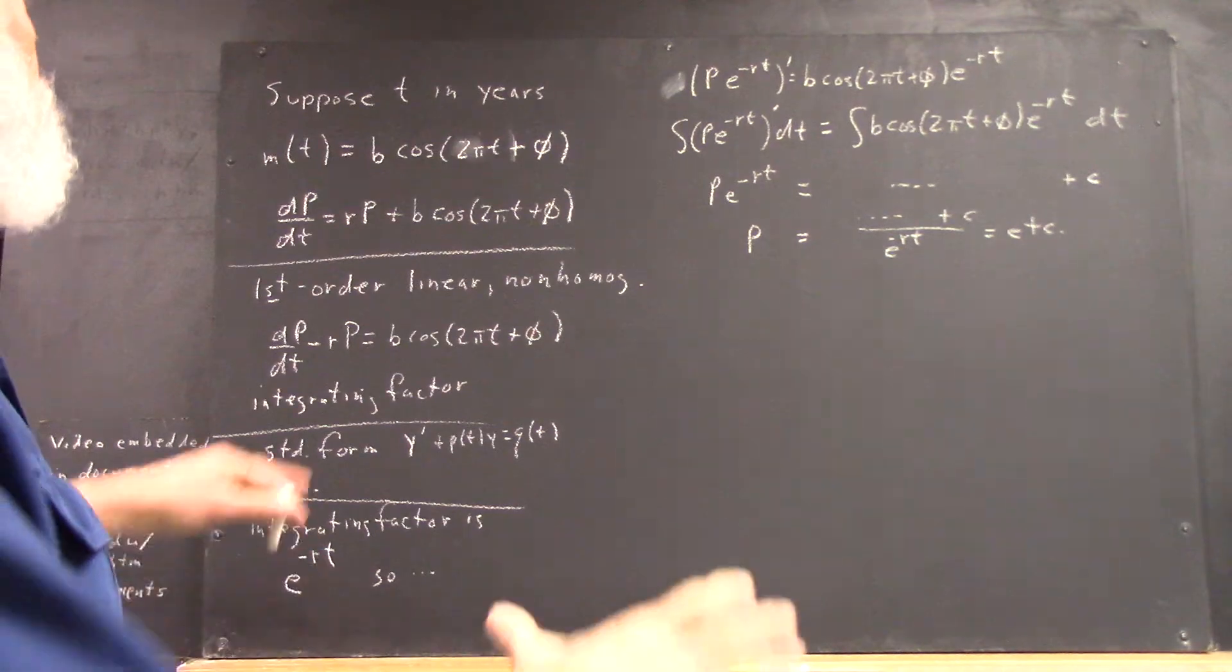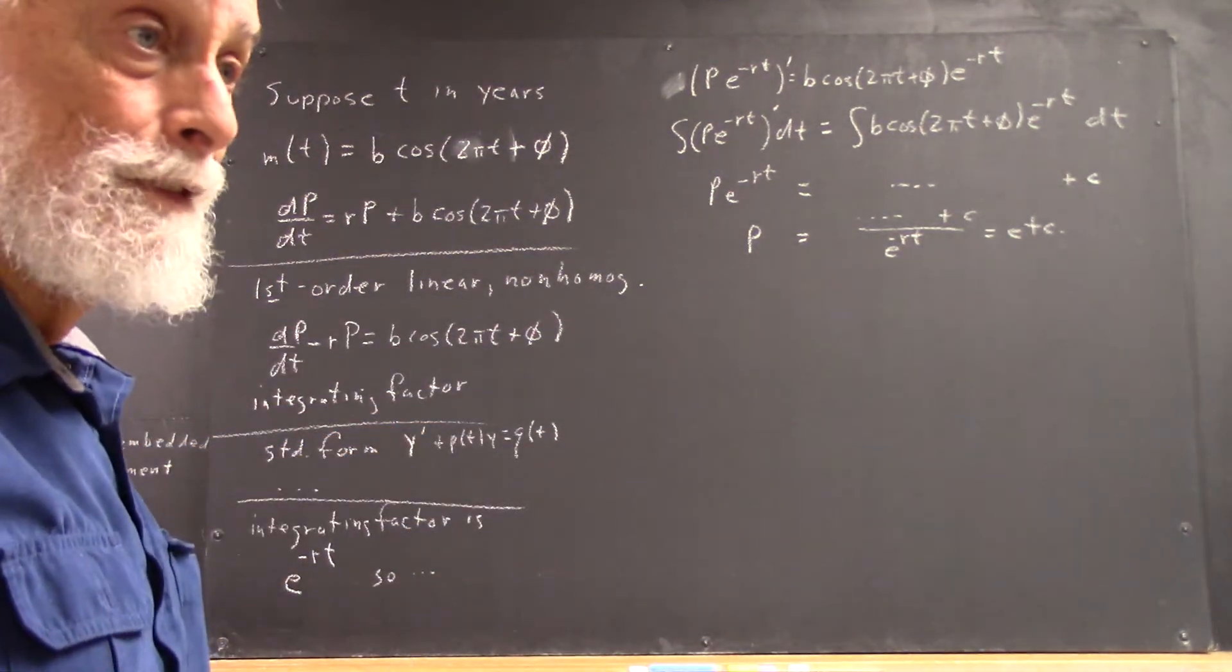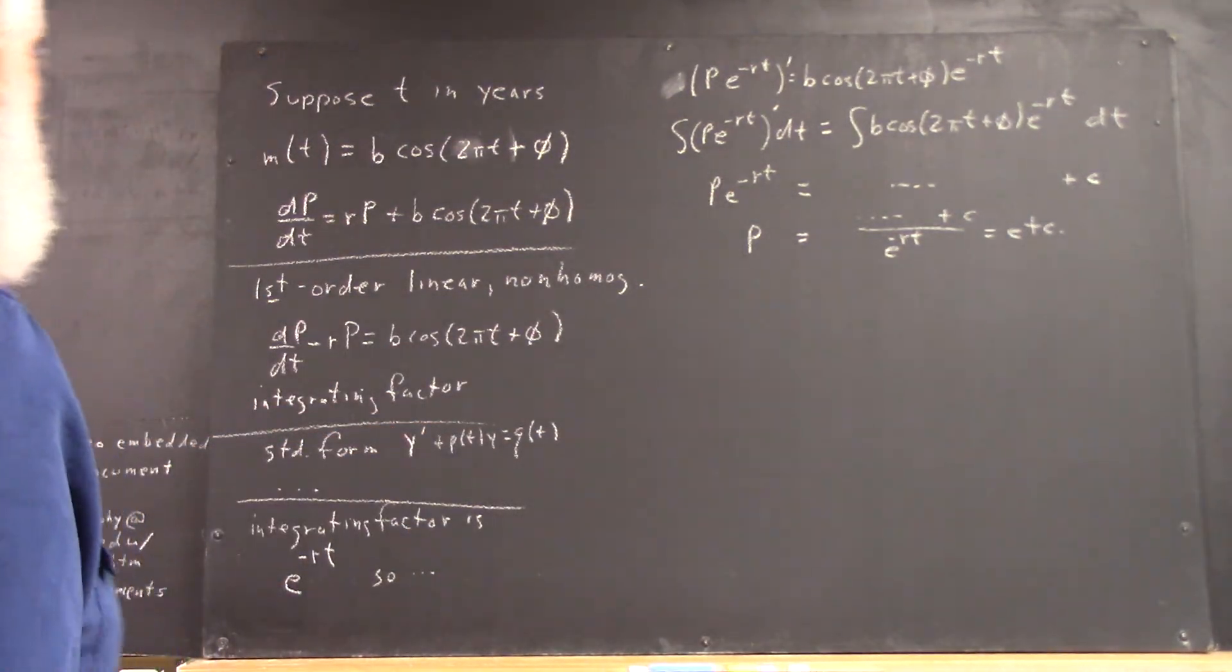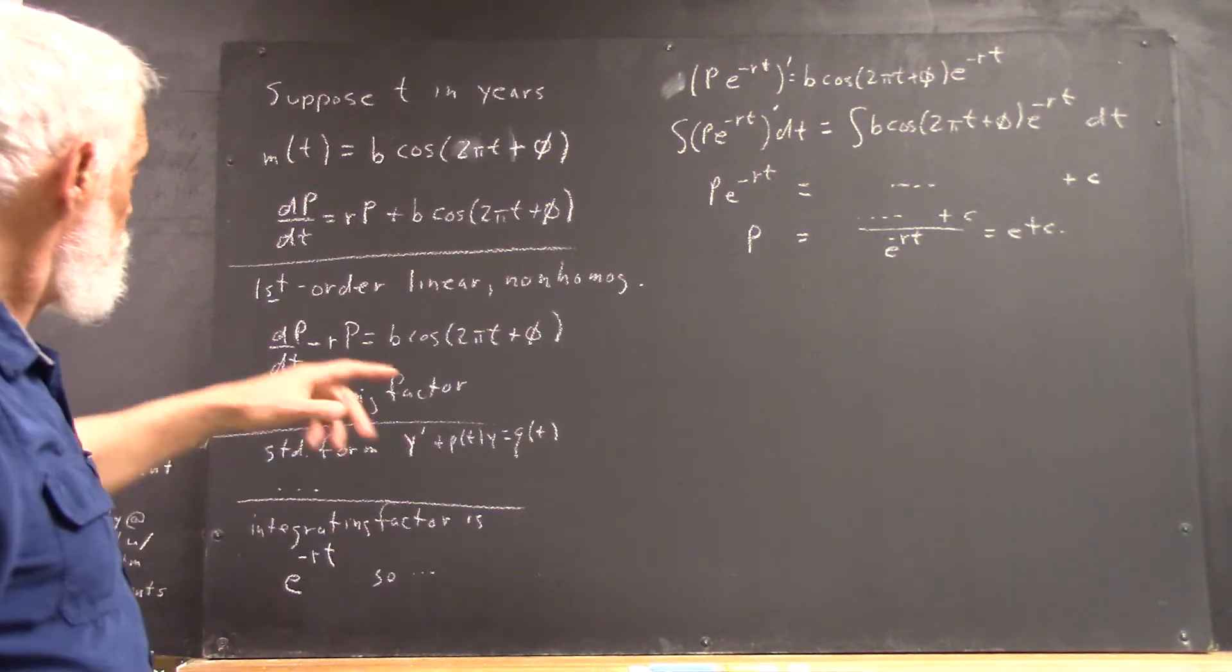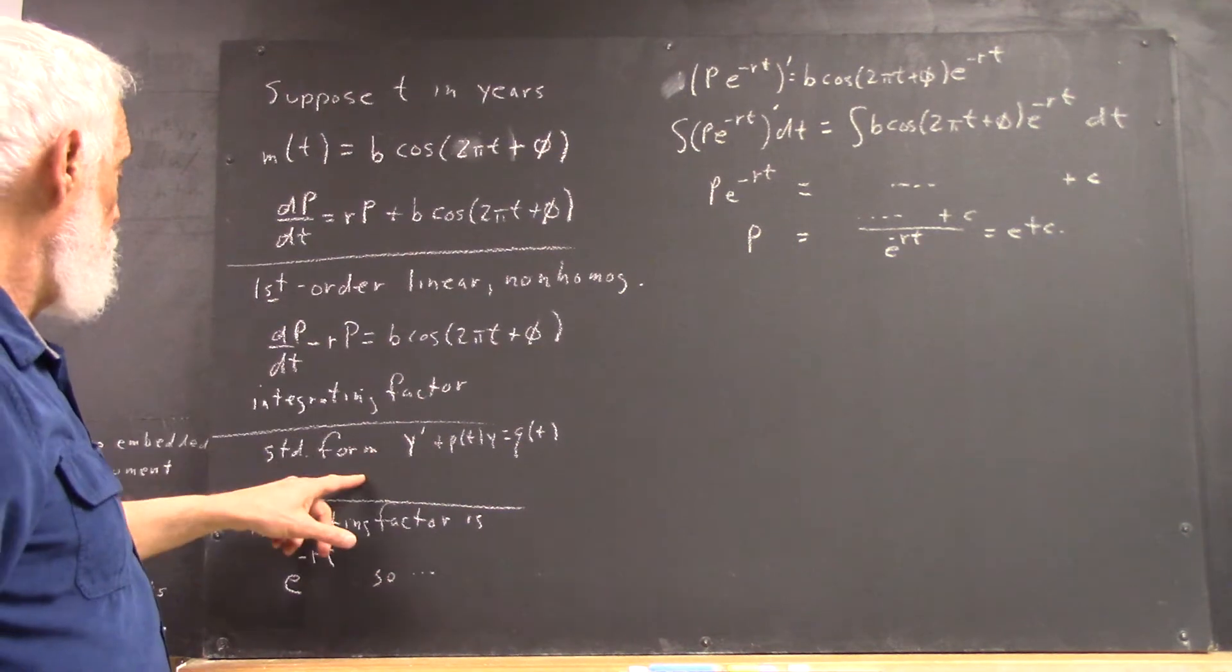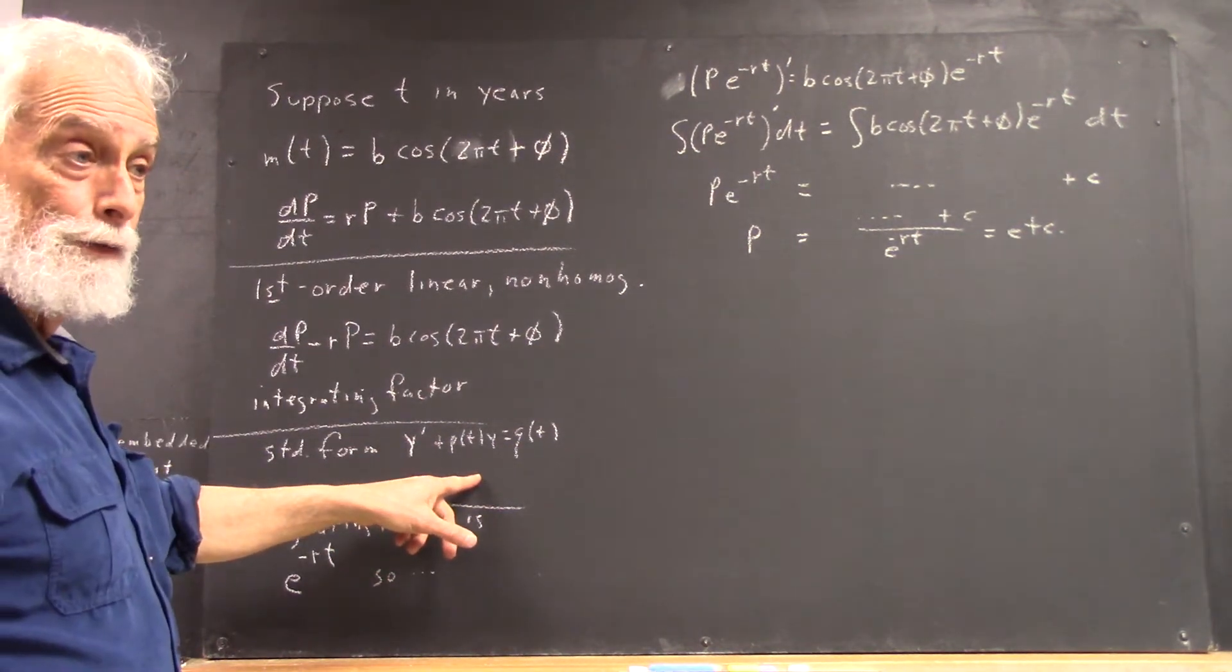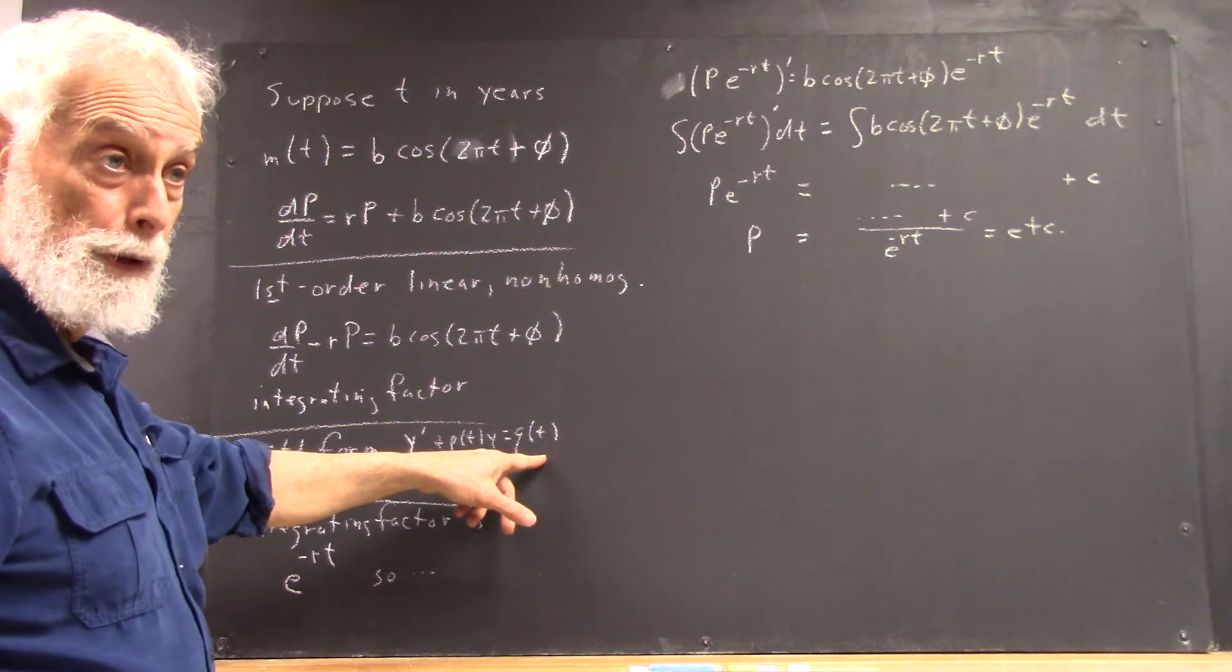And then step back and look at the broad sweep of the problem. Again, pretty straightforward. Your book will have examples of this, too. Pretty straightforward once you recognize that this is a first-order linear non-homogeneous equation.